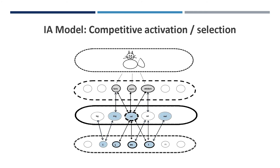When a target word such as 'cat' is activated, there is also spreading activation to semantically and phonemically similar words. For this reason, the IA model proposes that word processing is a competitive process. Activation of the word 'cat' is competing with activation of related words such as 'dog' or 'mat.' Similarly, the activation of target phonemes competes with the activation of related phonemes.